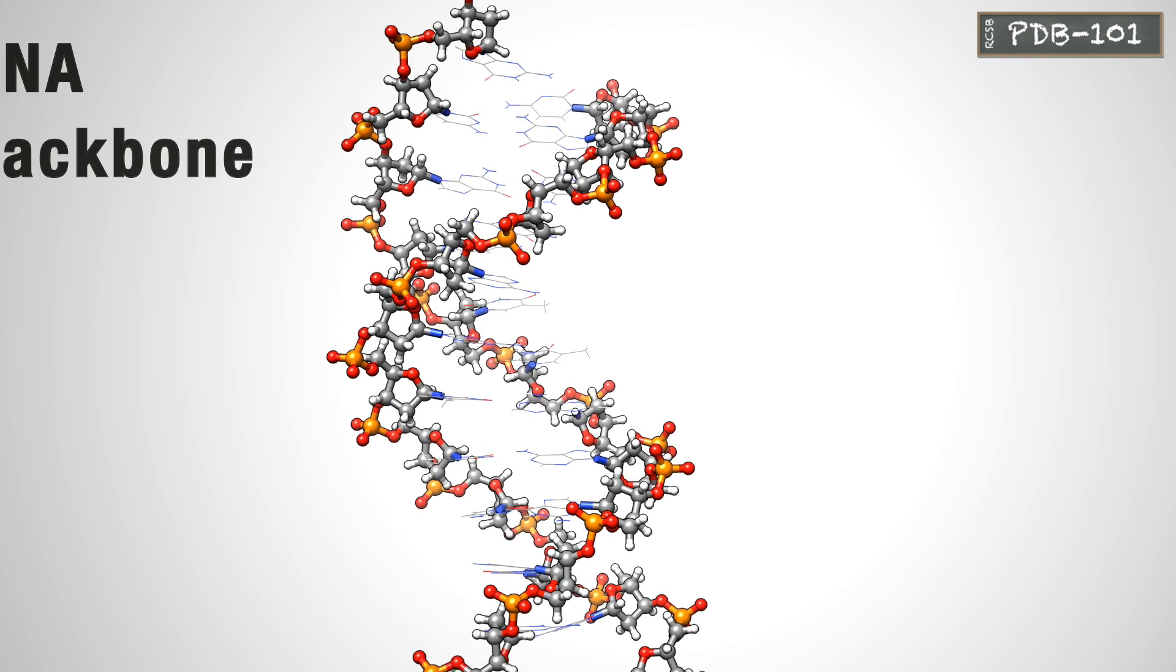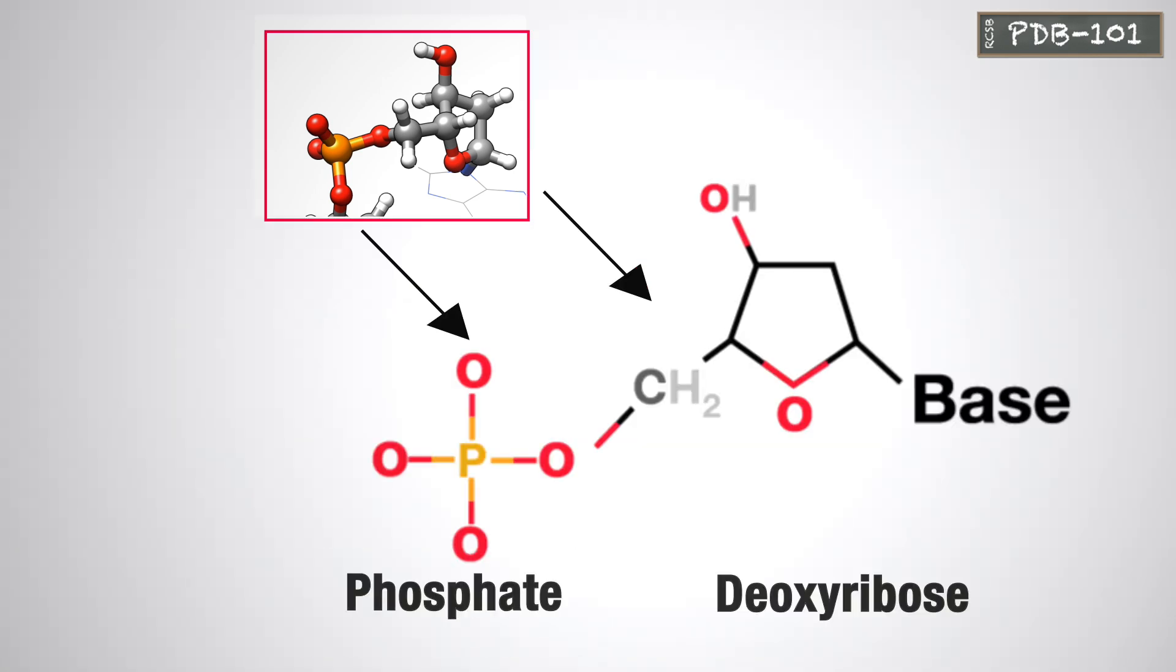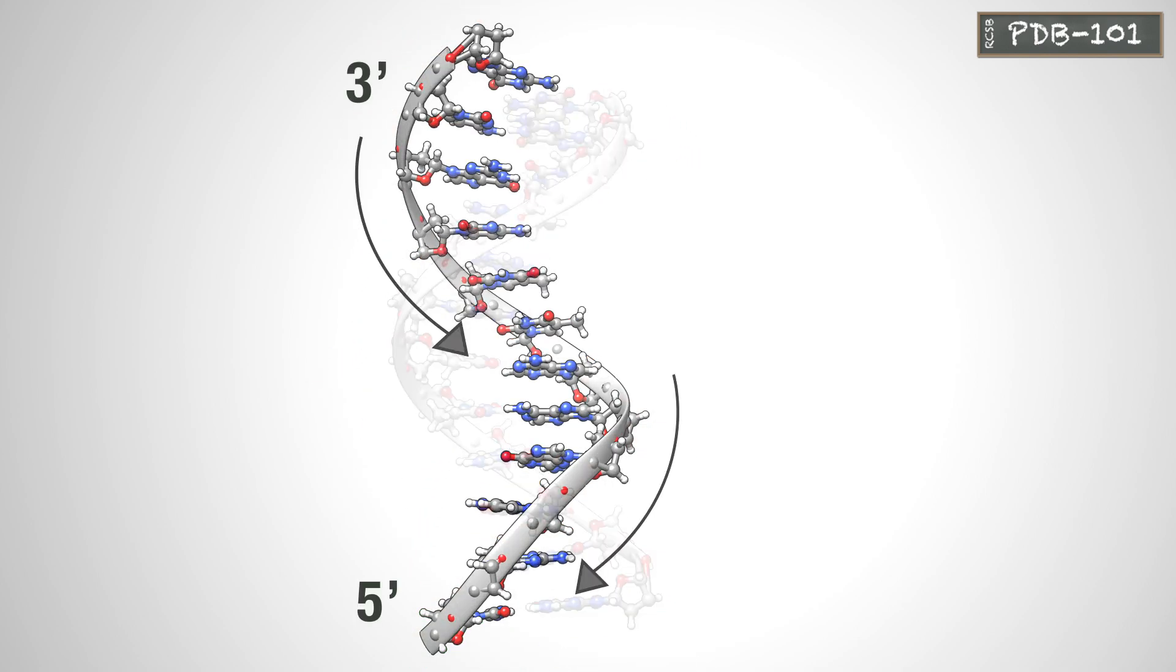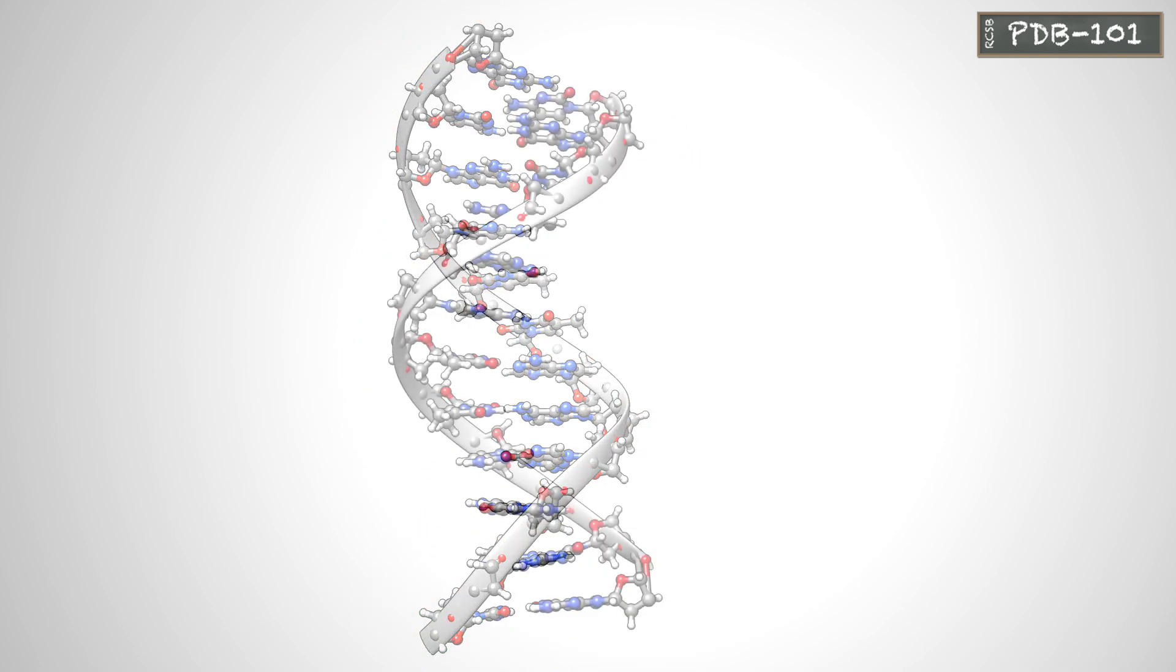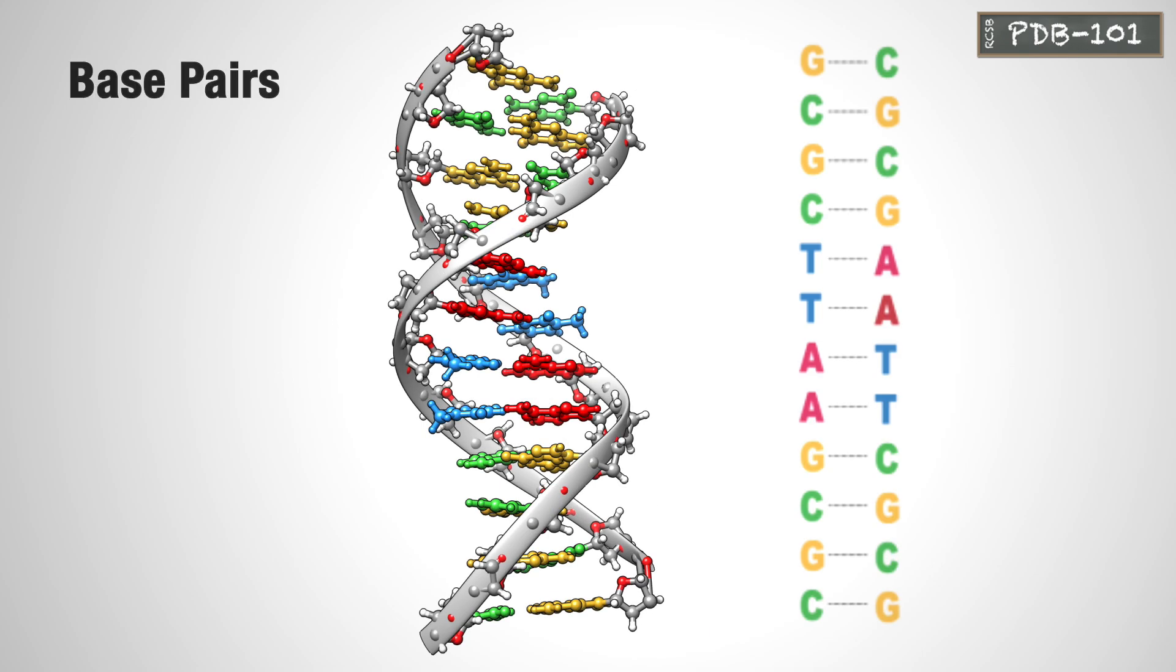Each helix has a backbone made of alternating deoxyribose and phosphate groups. Readout occurs in the 3' to 5' direction, making use of the pairing of bases between the opposing strands of the DNA double helix.